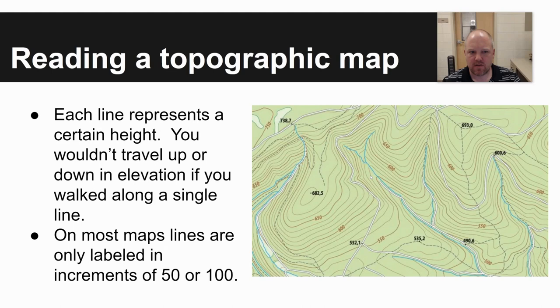Reading the topographic map. Each line of a topo map represents a certain height. You wouldn't have to travel up or down in elevation if you walked upon a single line. So you see towards the bottom left of the map, there's a line that says 600. If you walked upon this line, you would stay at an altitude of 600 feet along the entire map.